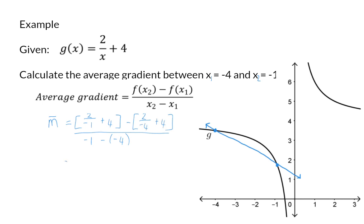From this I subtract the y value when substituting x with minus 4. My y values will be 2 and 3 and a half, and in the denominator minus 1 plus 4 simplifies to 3. So my average gradient is minus a half.